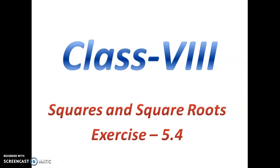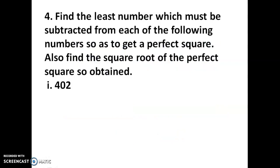Hello students. In the chapter Squares and Square Roots, let's continue Exercise 5.4 in this video. Fourth problem: find the least number which must be subtracted from each of the following numbers so as to get a perfect square, and also find the square root of the perfect square so obtained. The given number is not a perfect square, so it will leave a remainder, and that remainder has to be subtracted from the given number.